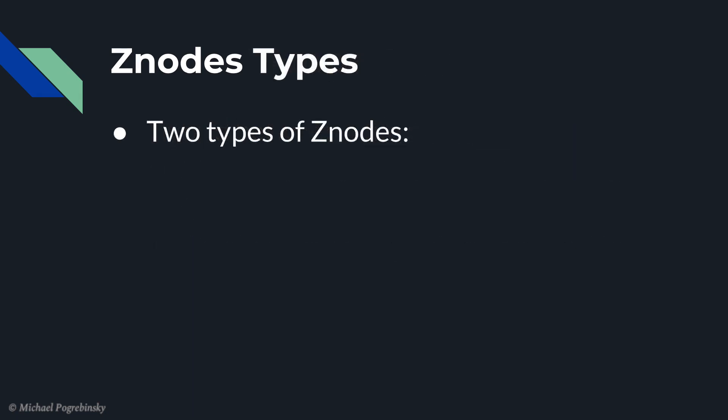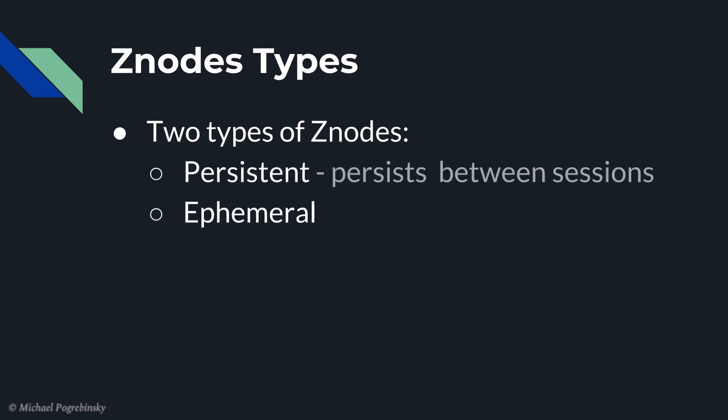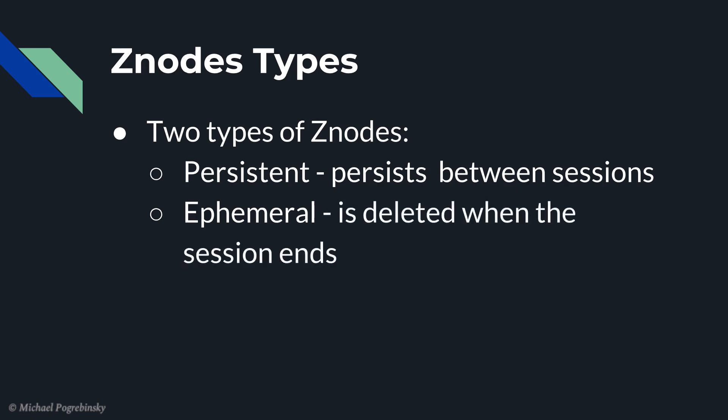There are two types of z-nodes: persistent and ephemeral. Persistent z-nodes stay in between sessions. In other words, if our application disconnects from Zookeeper and then reconnects again, a persistent z-node that was created by our application stays intact with all its children and data. An ephemeral z-node is the exact opposite — it gets deleted as soon as the application that created that z-node disconnects from Zookeeper. We can already guess that ephemeral z-nodes would be a great tool for us to identify if another node that created them went down.